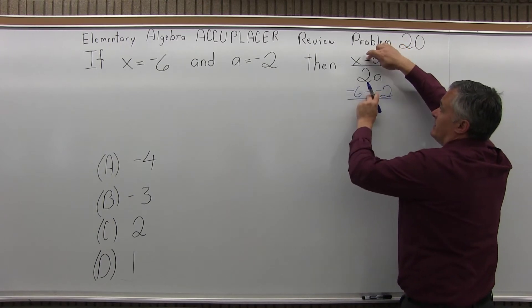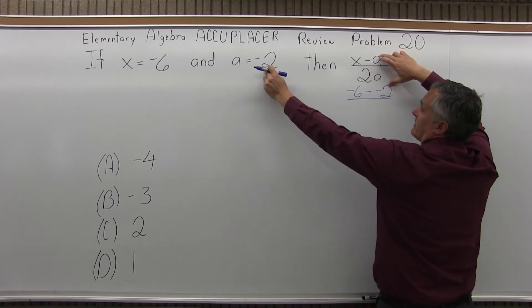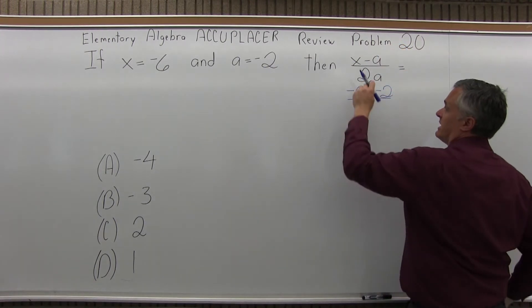Notice the two negatives together, one negative from the problem the way it's written and the other negative from the fact that a is a negative value. Those are going to combine to negative 6 plus 2 on the next step.